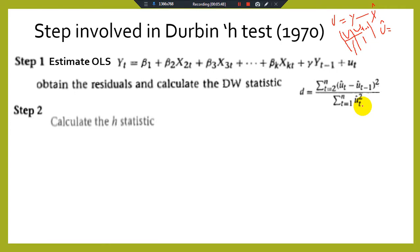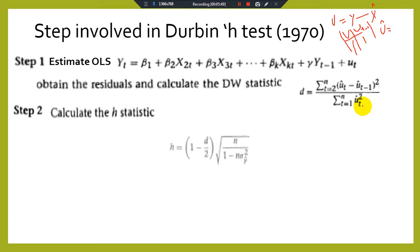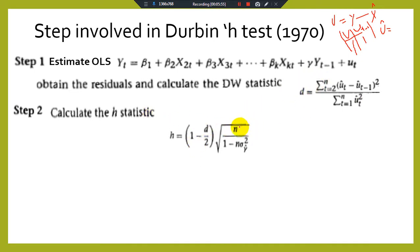Step 2 — Calculate the H statistic. You have now calculated the D value. Put the D value into the formula. You have the number of observations N and the variance of the lagged dependent variable coefficient. Substitute all values and perform the multiplication and division to obtain the value of the Durbin H statistic.